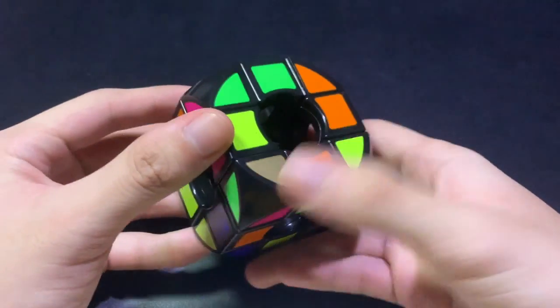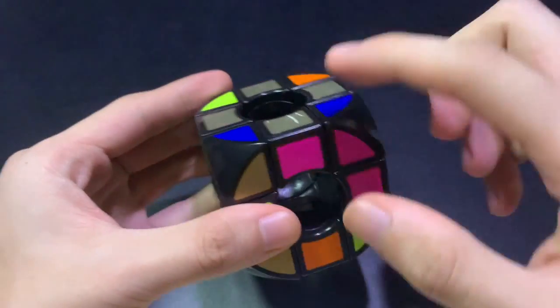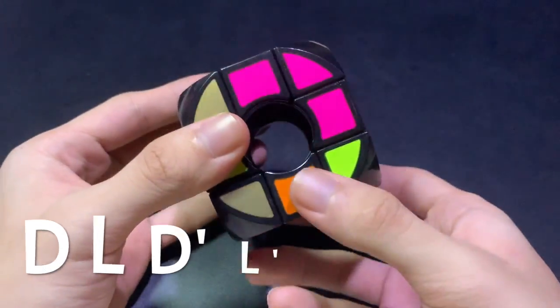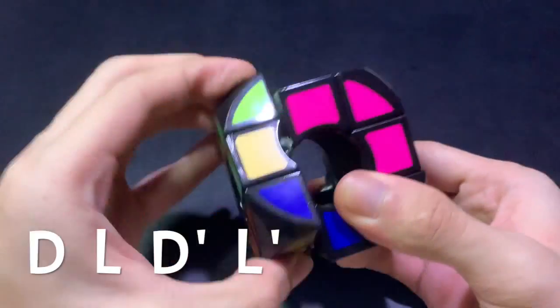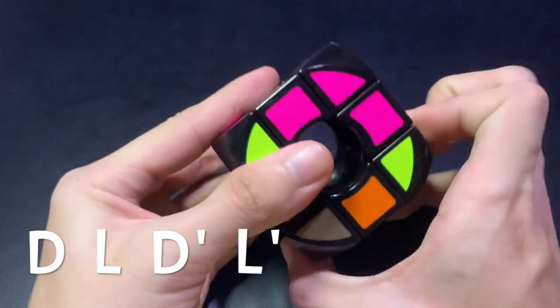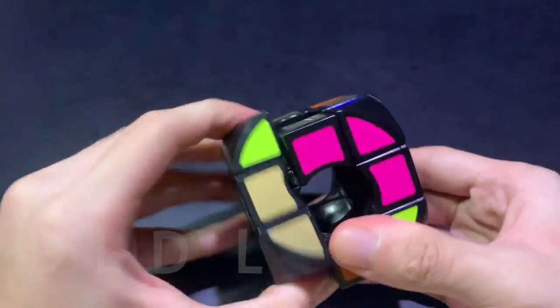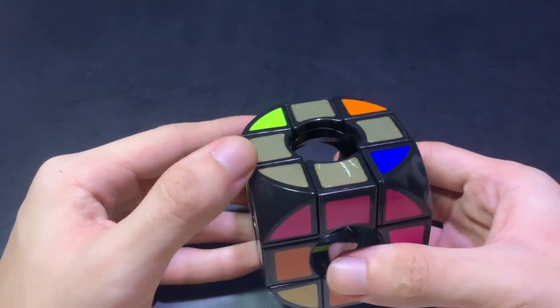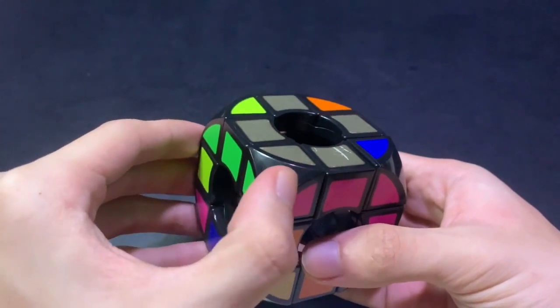So now let's check if it's correct. Let's go look for the piece, this one, and then we have to place it here. So we can do down, l, d prime, and l prime. So now it's correct. See? Green, pink, and then green, pink.